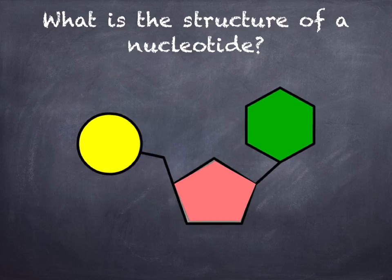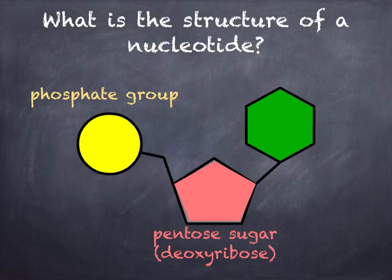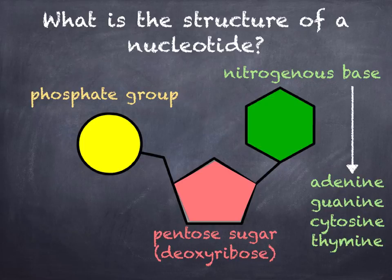Just to recap: a nucleotide has got a pentose sugar — in DNA this is deoxyribose. It's got a phosphate group and a nitrogenous base, and this nitrogenous base can be one of four: adenine, guanine, cytosine, or thymine.